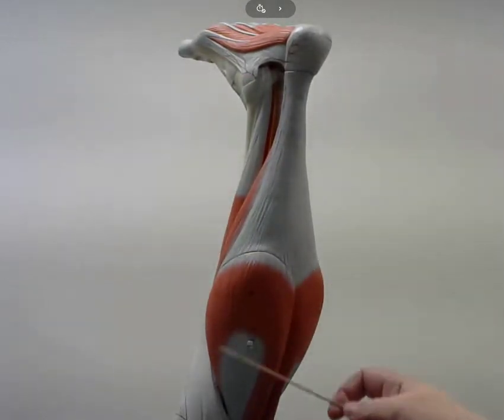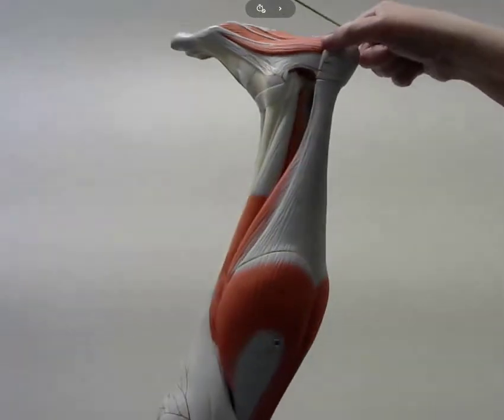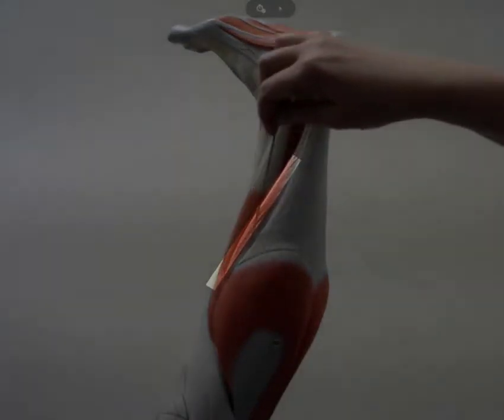So both of these together are the gastrocnemius. And then here, the soleus, the soleus.